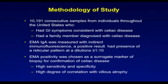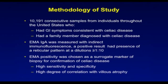Our methodology was that we collected over 10,000 samples from patients at risk for celiac disease. These patient samples included those with relatives who had celiac disease and those considered at risk by their physicians because of having symptoms of the disease. We analyzed blood samples for anti-endomesial antibody and HLA-typing. The anti-endomesial IgA was measured with indirect immunofluorescence, and a positive titer was considered greater than 1 to 10. EMA positivity was chosen as a surrogate marker for biopsy due to its very high sensitivity and specificity, and because it correlates with villous atrophy seen on biopsy for celiac disease.